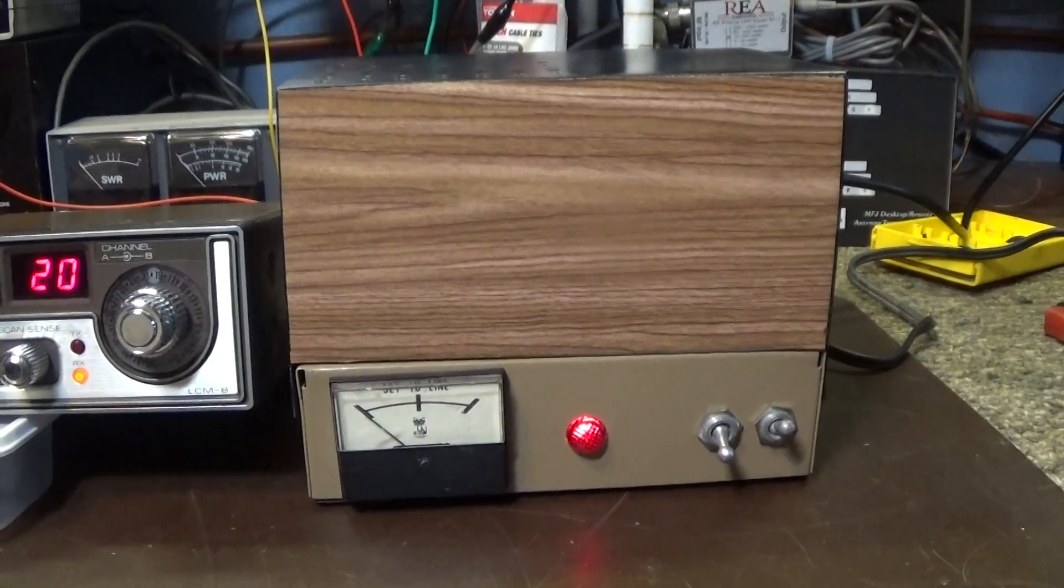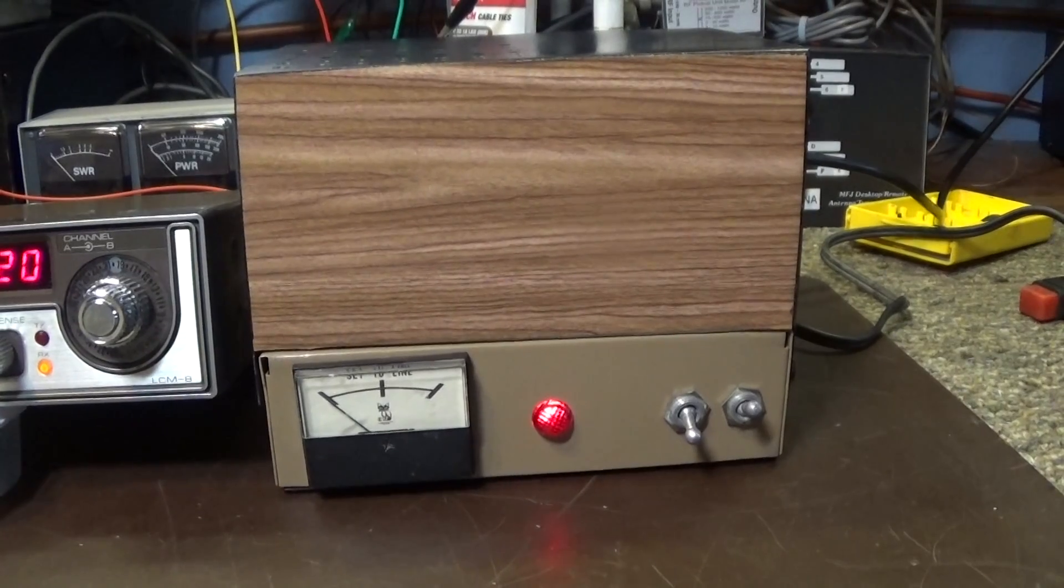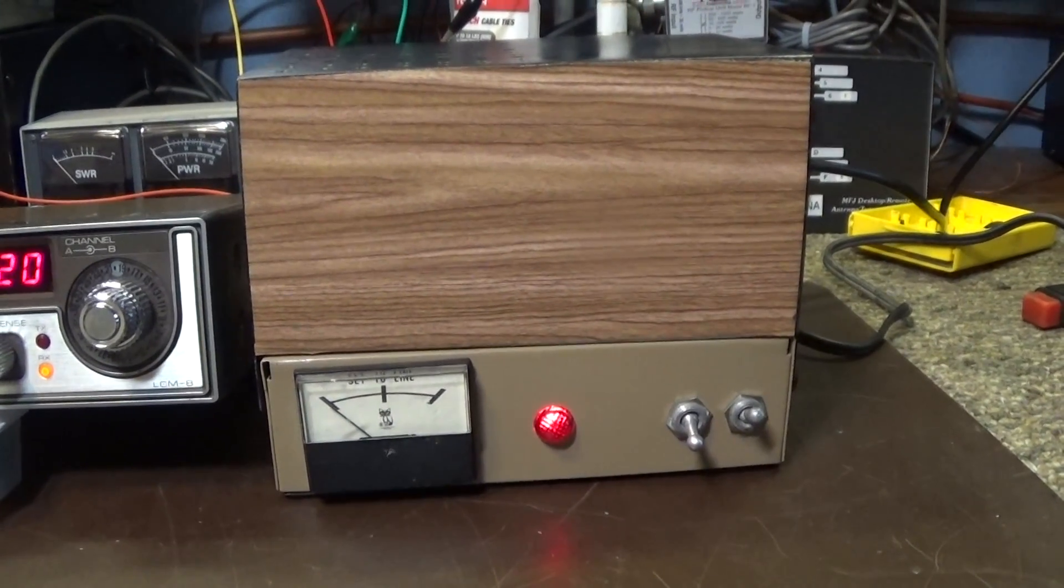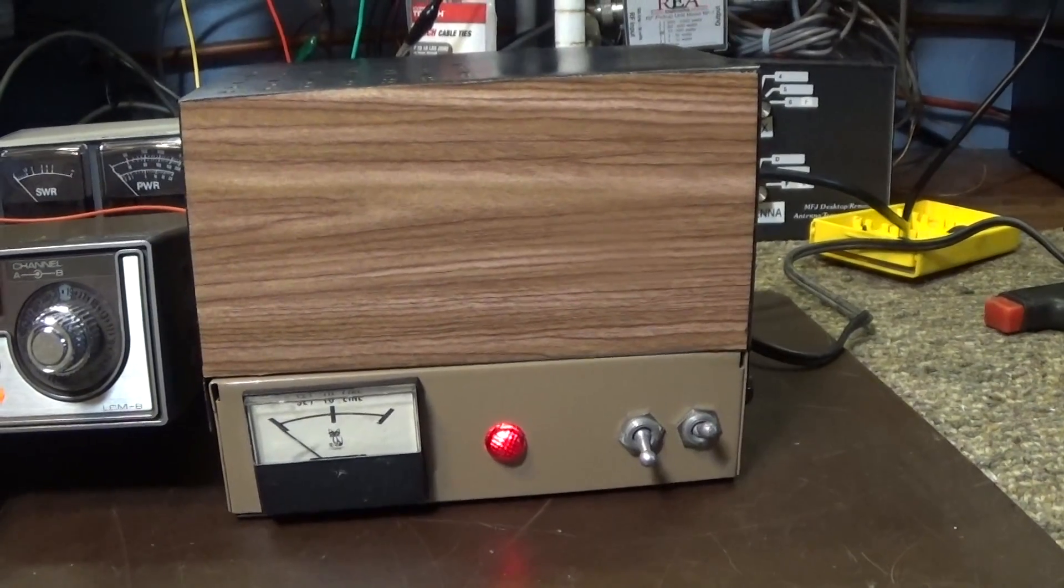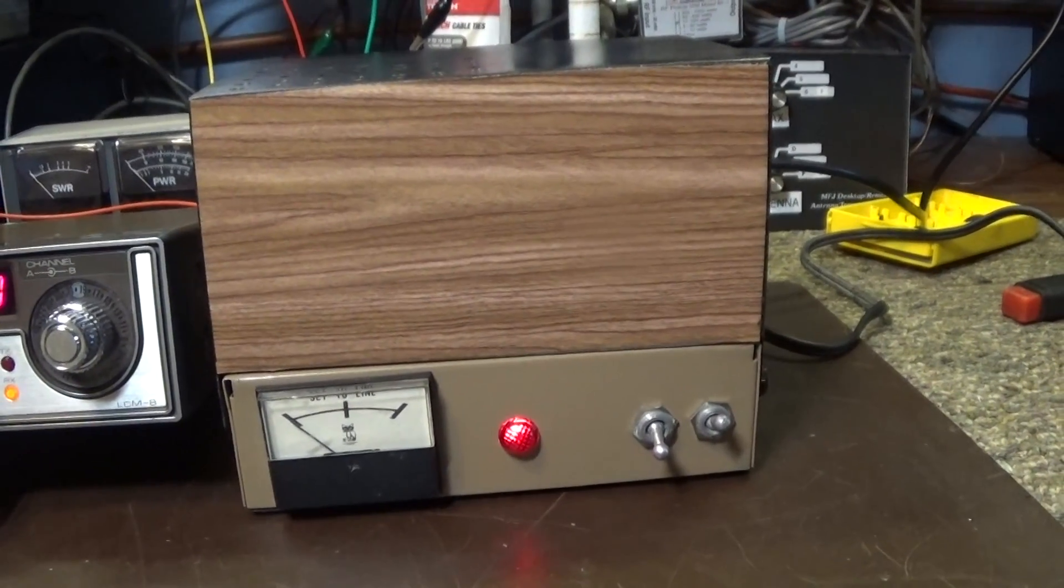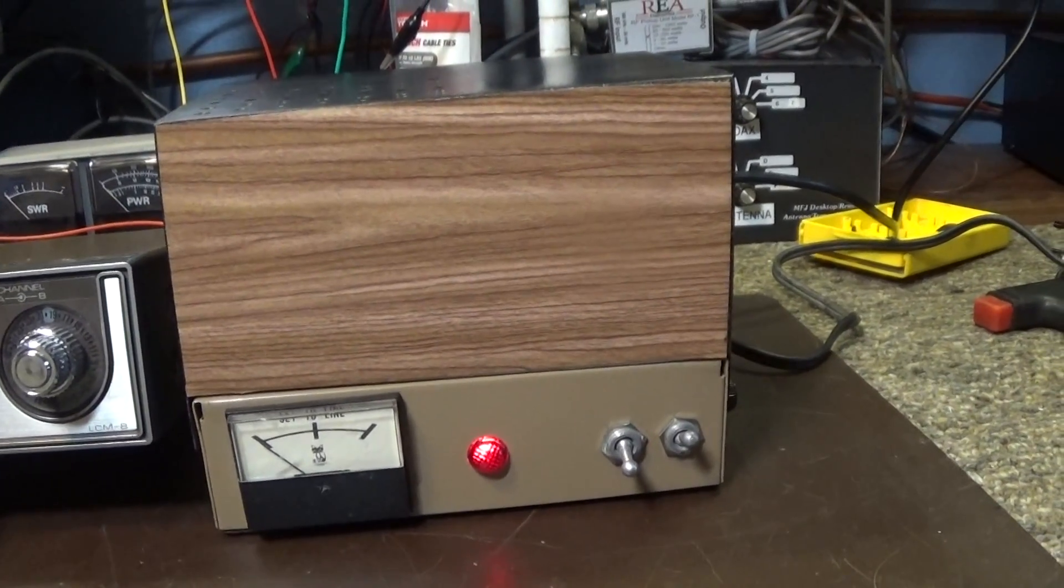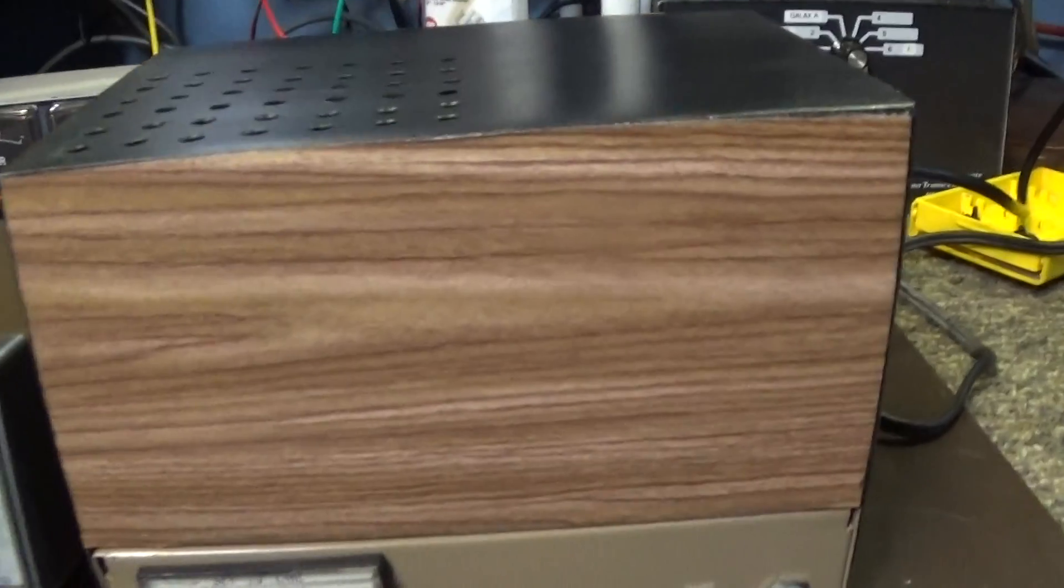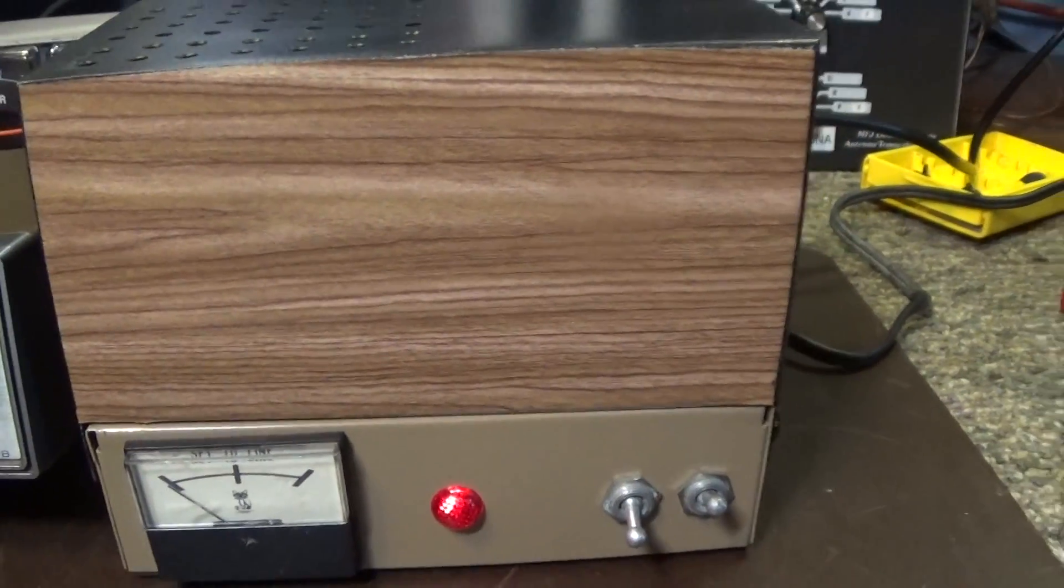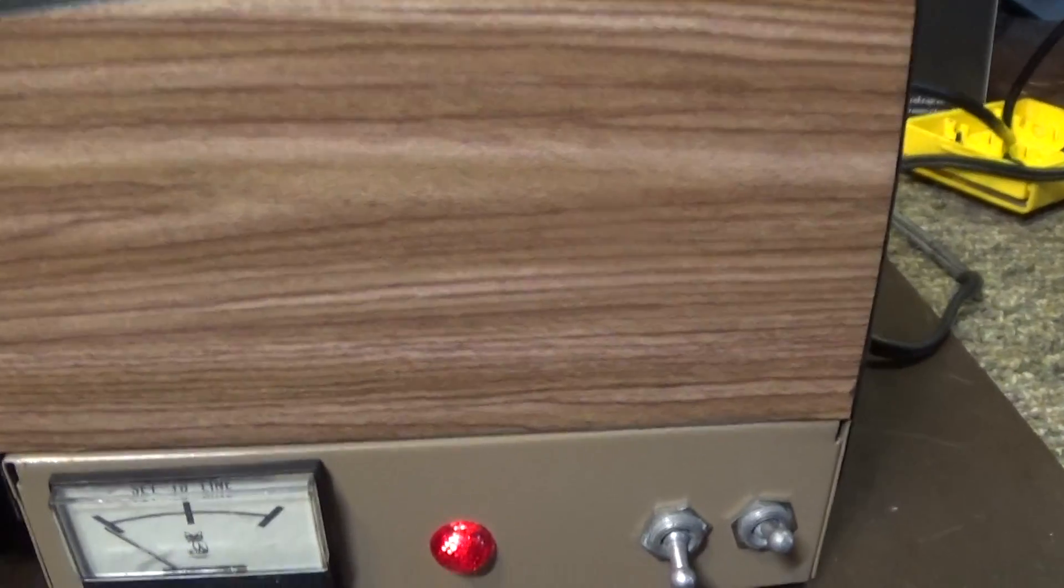All right, today we're going to do another video on a JB 12. This is the older version because it has a second tube in it, a 6AQ5, that's actually the keyer tube, where the newer ones had a transistor keying circuit. So it has a 6BQ5 for the power tube, and again, the second tube is the 6AQ5. All it does is key the relay.